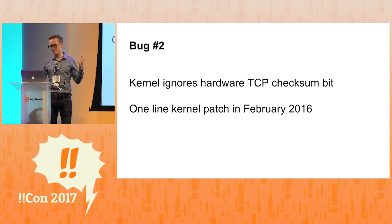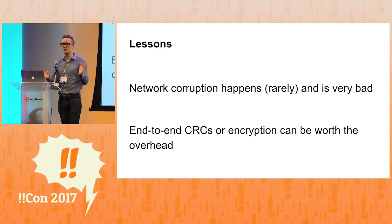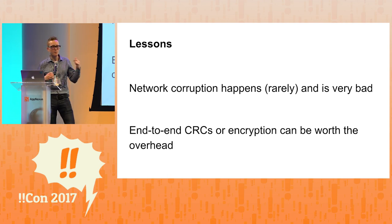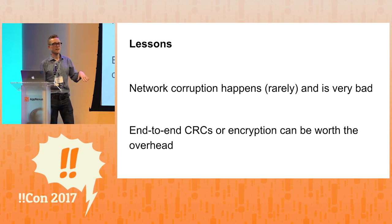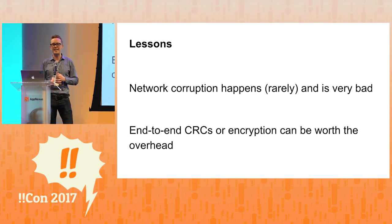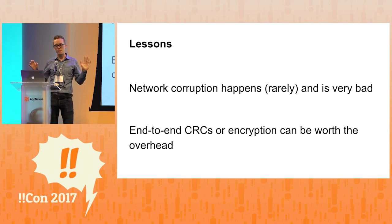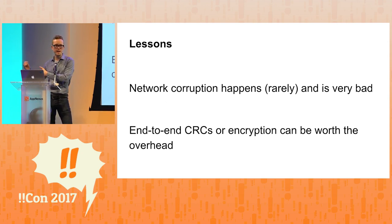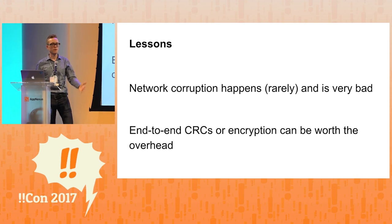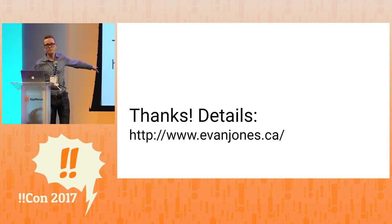That was the conclusion of about three months of work. The lessons: network corruption does happen — it happens extremely rarely, but when it does, it's extremely bad and really costly. I've been contacted by people who've had this happen too, but they can't really talk about it because their employers are unhappy about discussing things like this. So just putting it out there: don't blame the network, but sometimes it does happen. You can solve this by adding end-to-end CRCs or encryption — if your application adds its own CRC or uses TLS or SSL, this problem goes away, so it might be worth the overhead in many applications. Thank you very much. I have more details on my website, evanjones.ca, if you want the gory details.